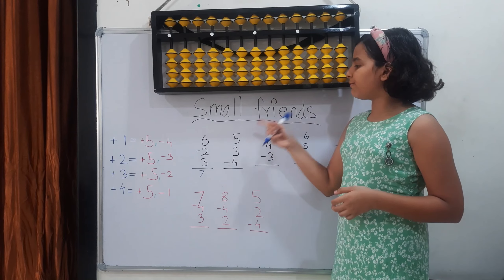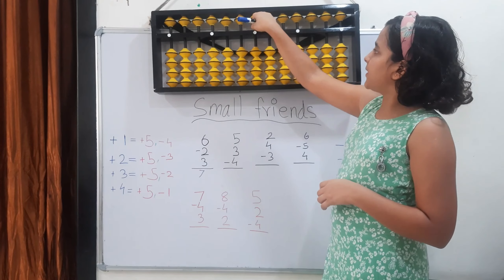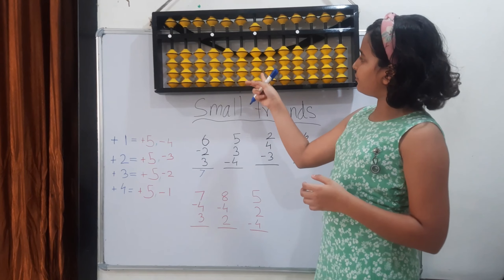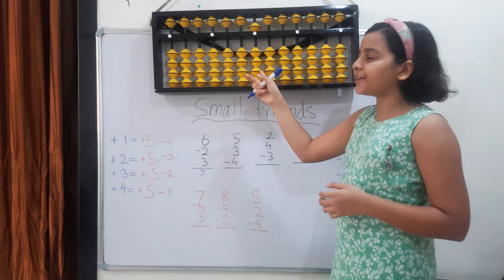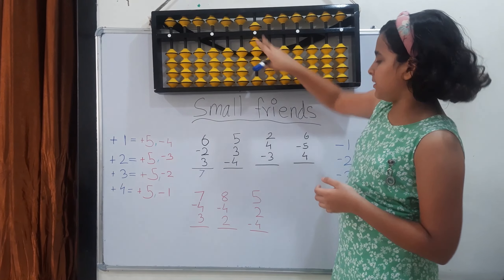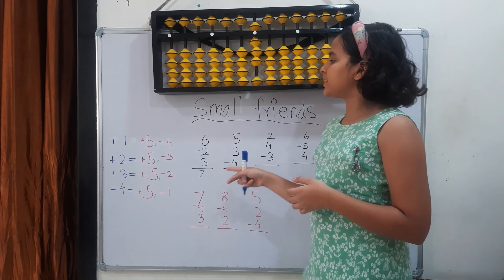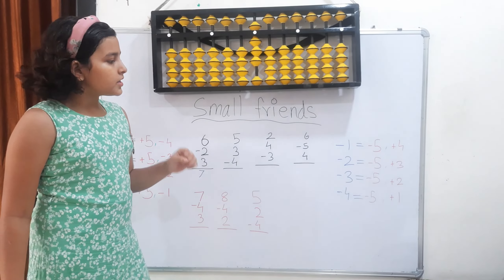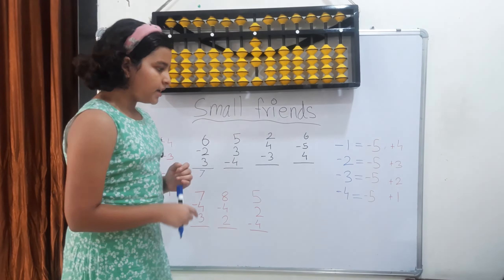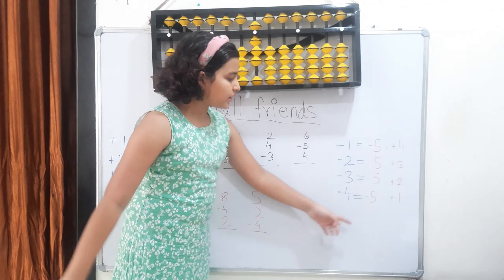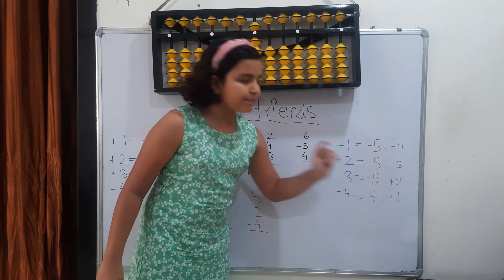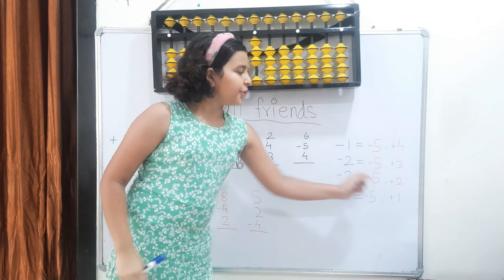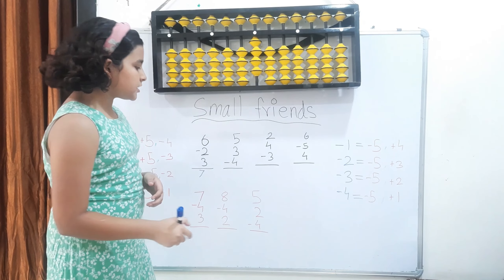Next sum: 5. I add 5, then add 3 — I have 4 bits so I can add 3 directly: 1, 2, 3. Then minus 4, but only 3 bits are available, so I need the small friends formula: minus 4 equals minus the 5 plus the 1. Minus the 5 and add the 1. The answer is 4.